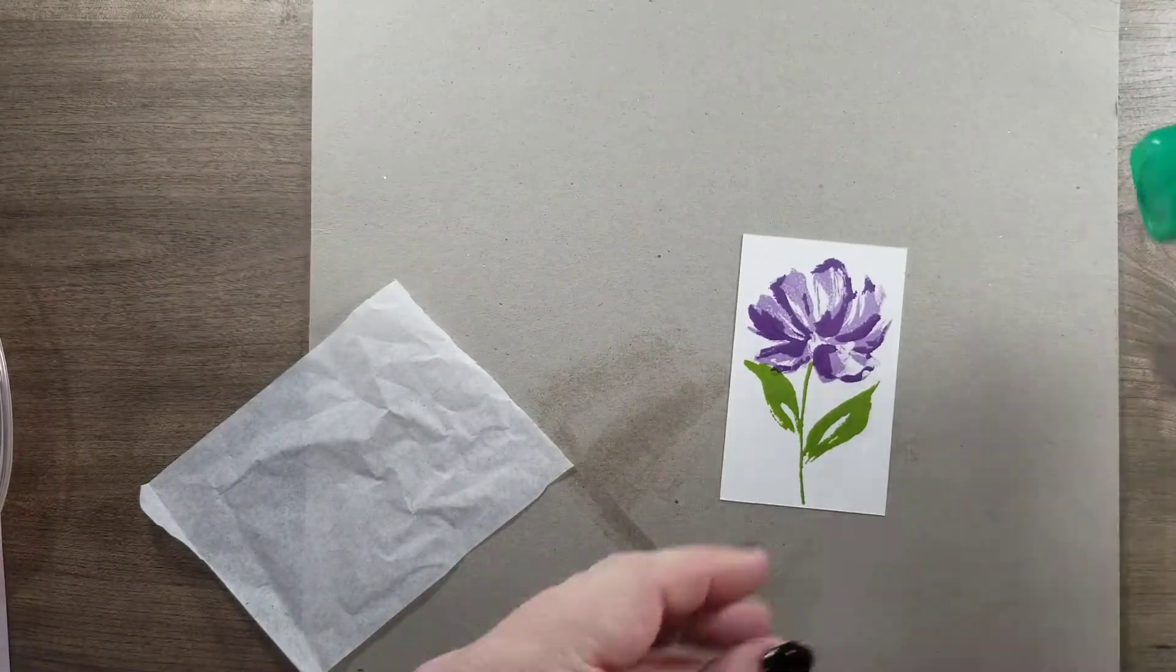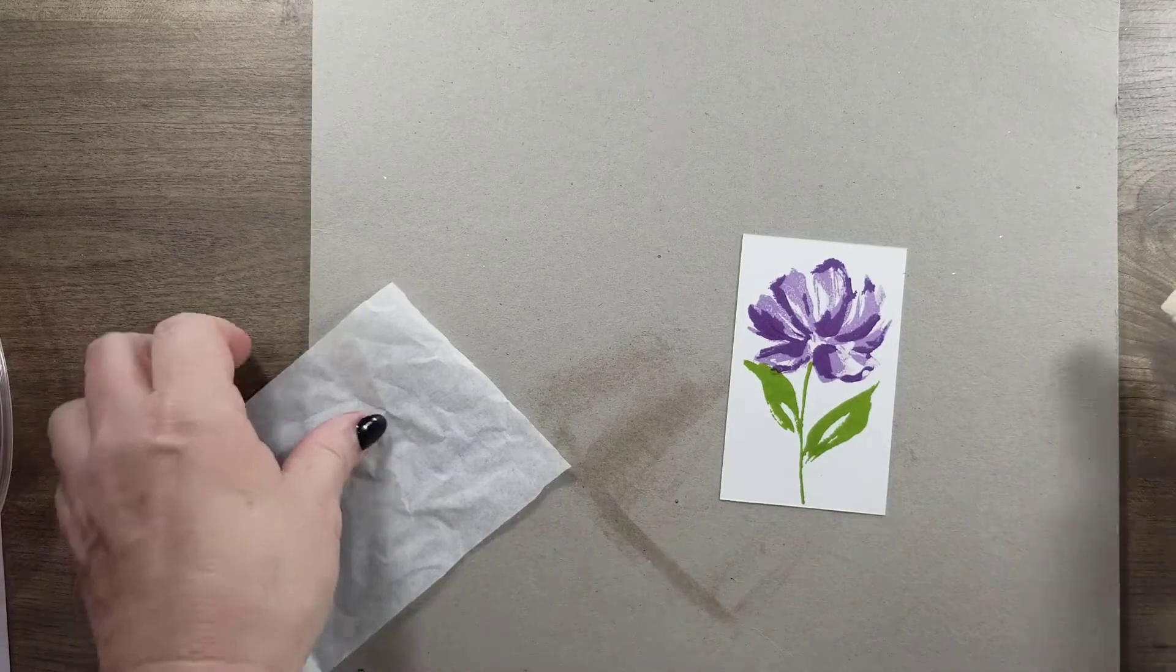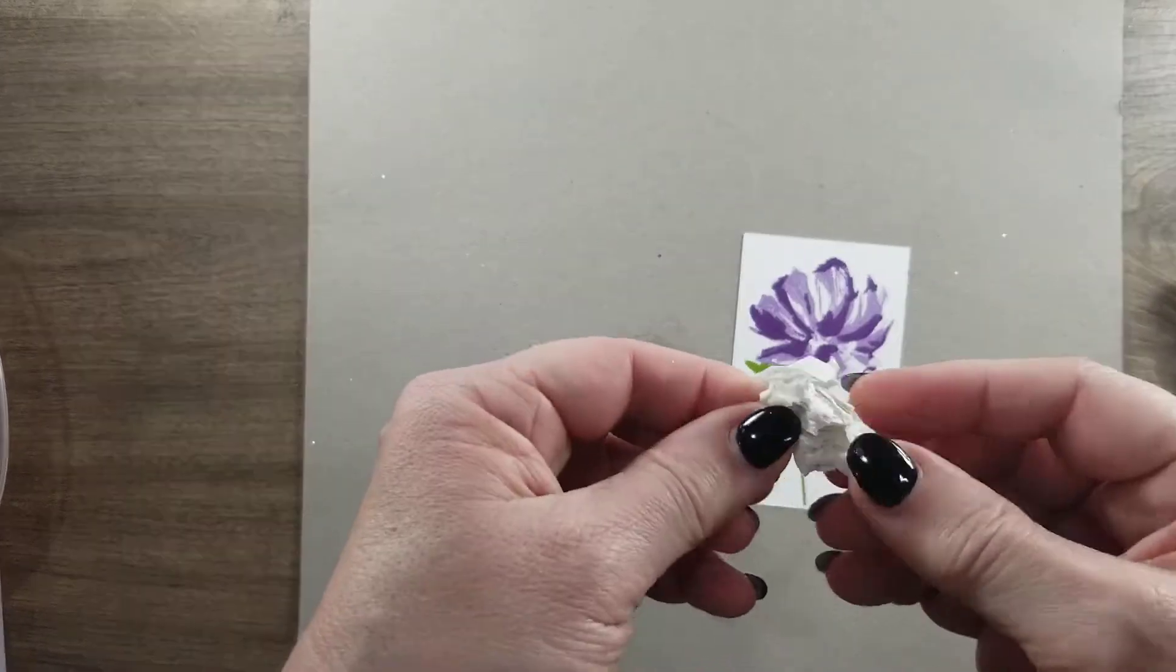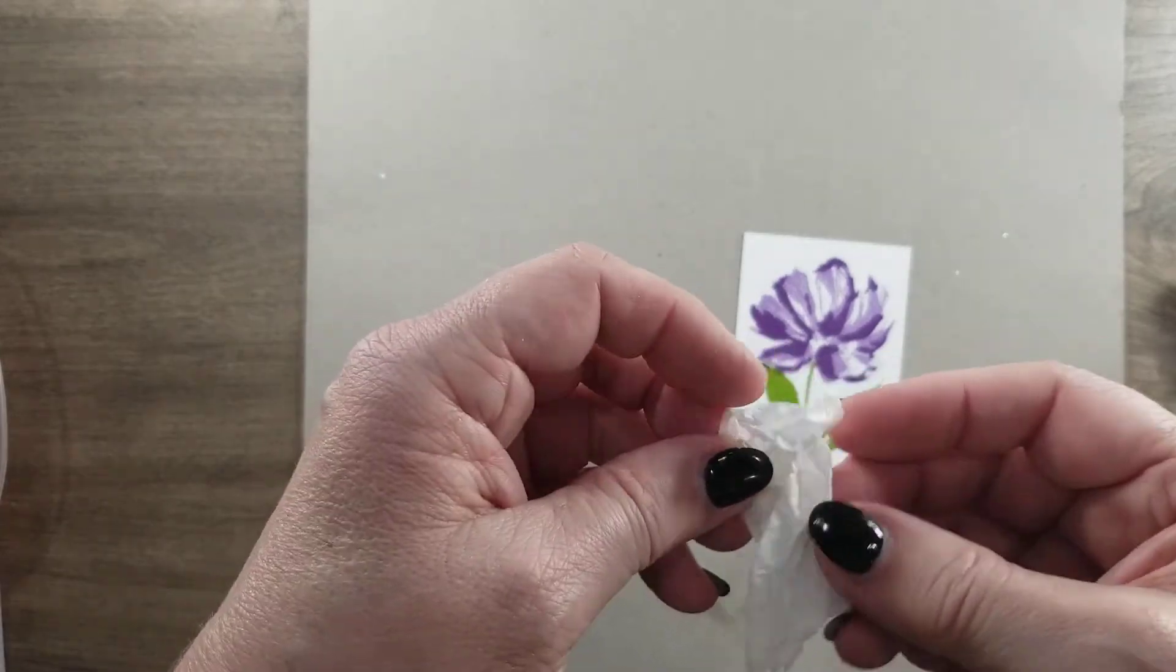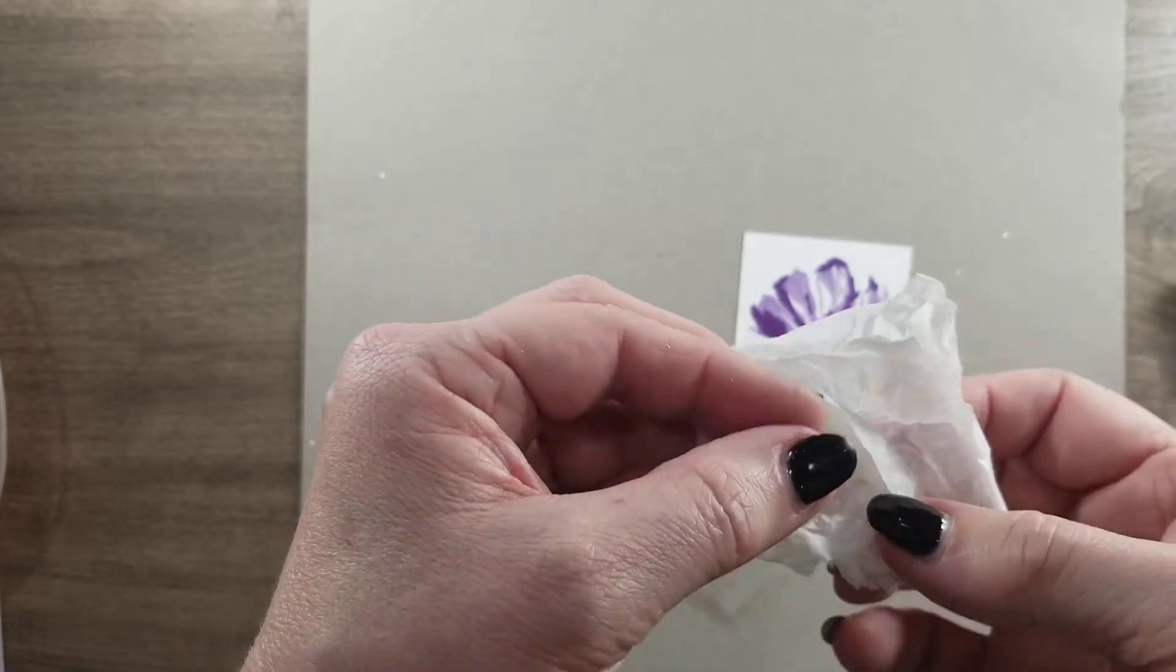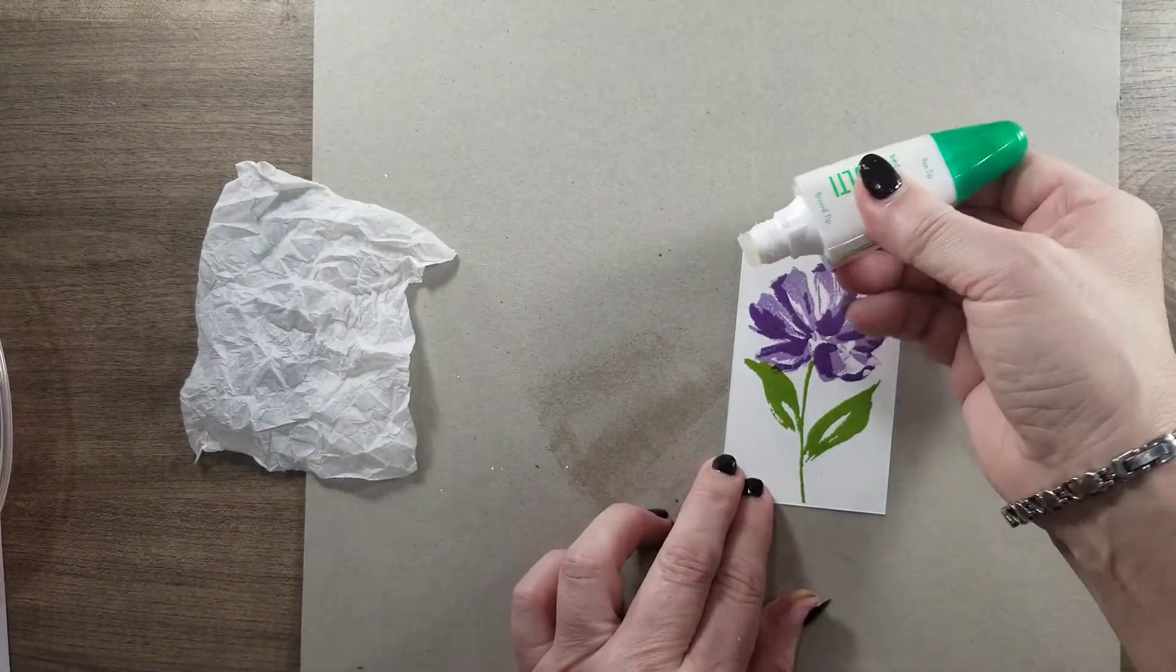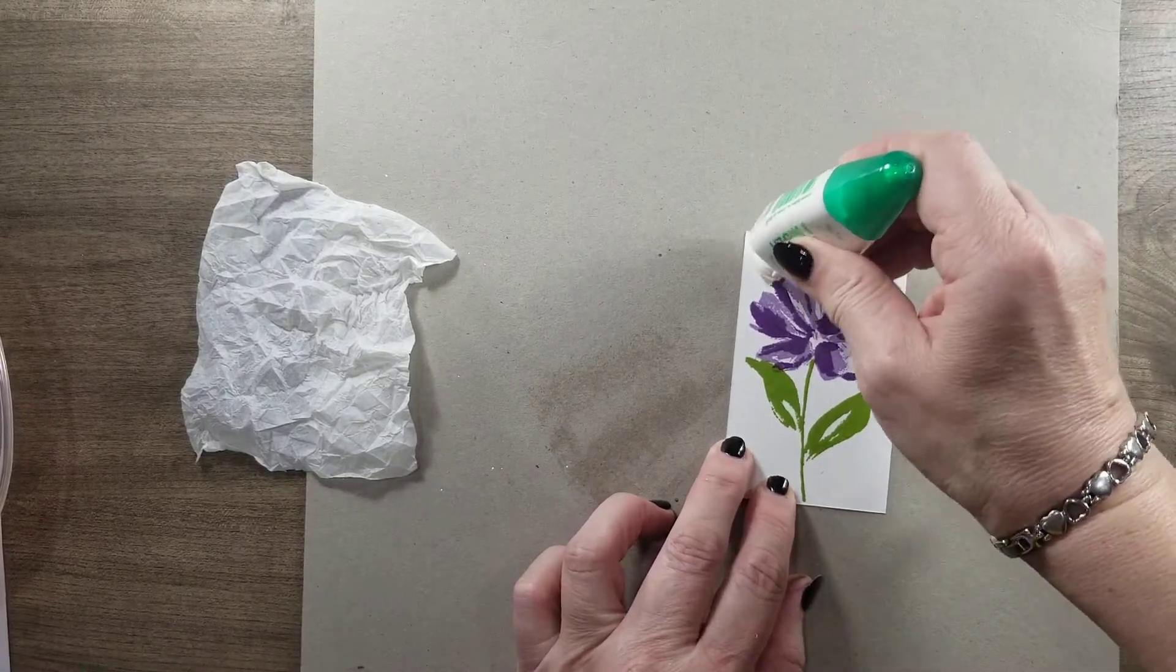Now we're going to take our glue. First I'm going to scrunch this all up. Be careful not to tear it, just kind of open it up carefully. You don't want to pull all the wrinkles out of it.